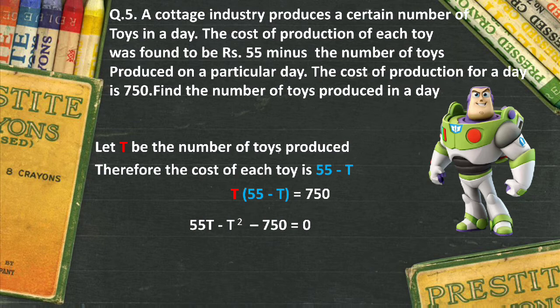Expanding gives us 55t minus t squared, and bringing 750 from the right-hand side over changes the sign to minus 750. All I have to do now is rearrange those terms and solve the quadratic equation. Whatever the answer, I will get t equal to one value or another. If at all a number is negative, you need to ignore it, because the number of toys cannot be negative — so consider only the positive number.